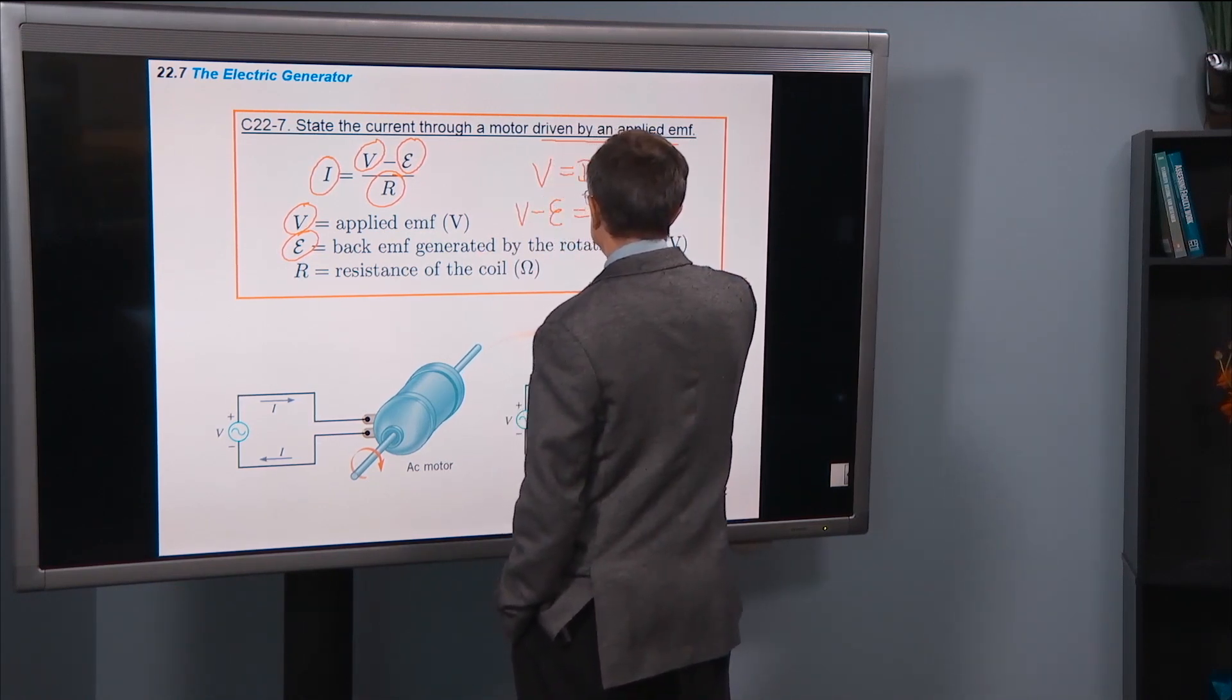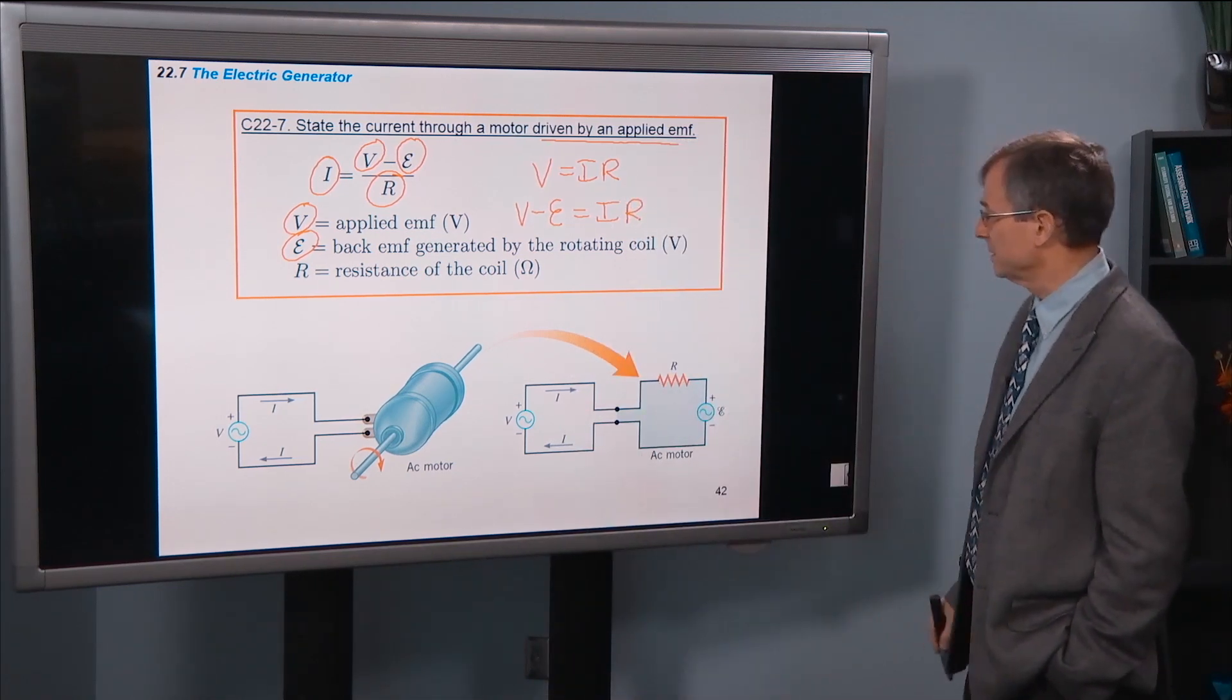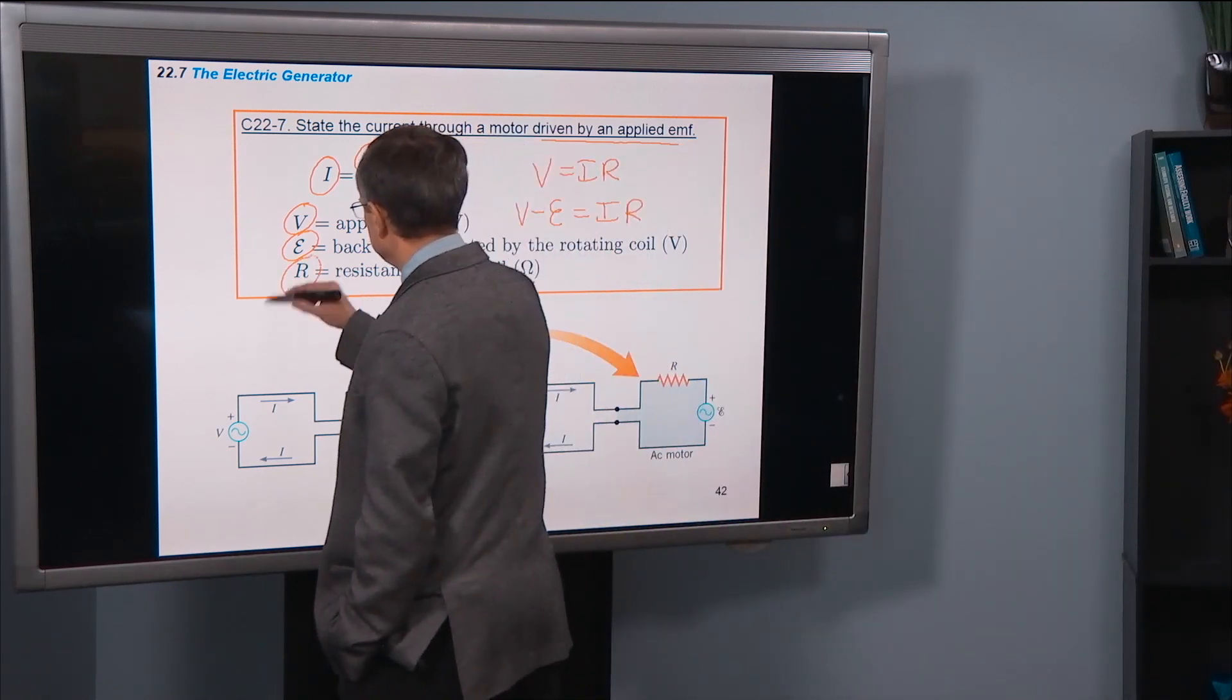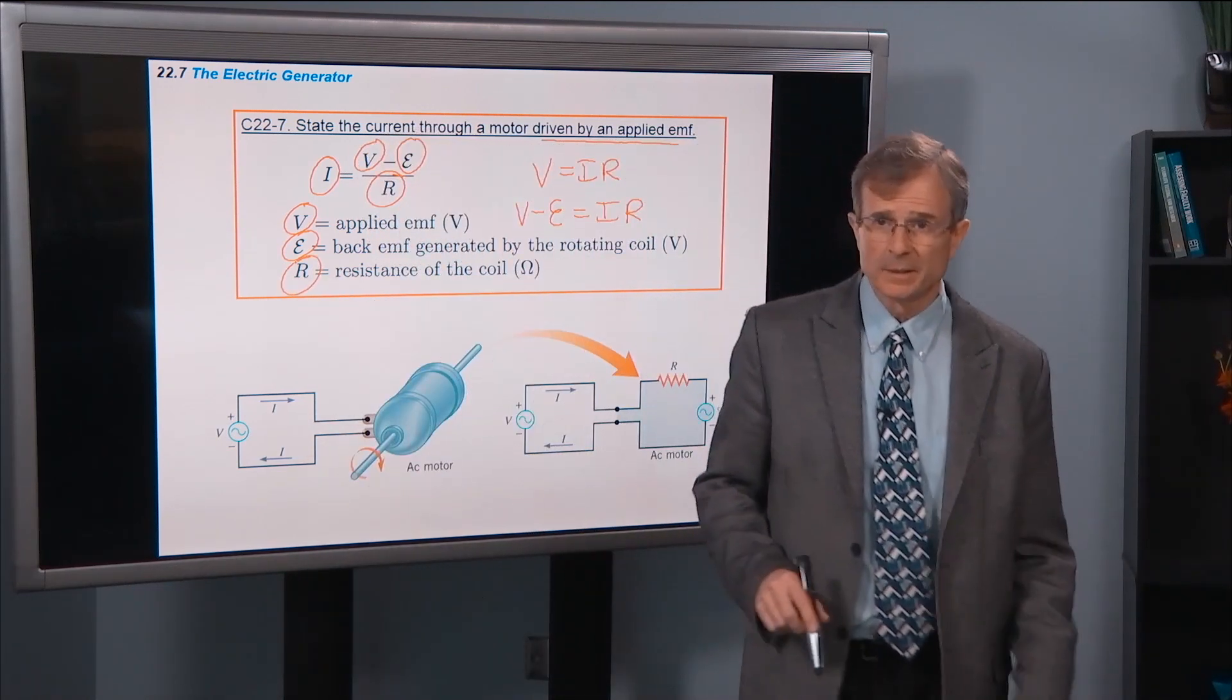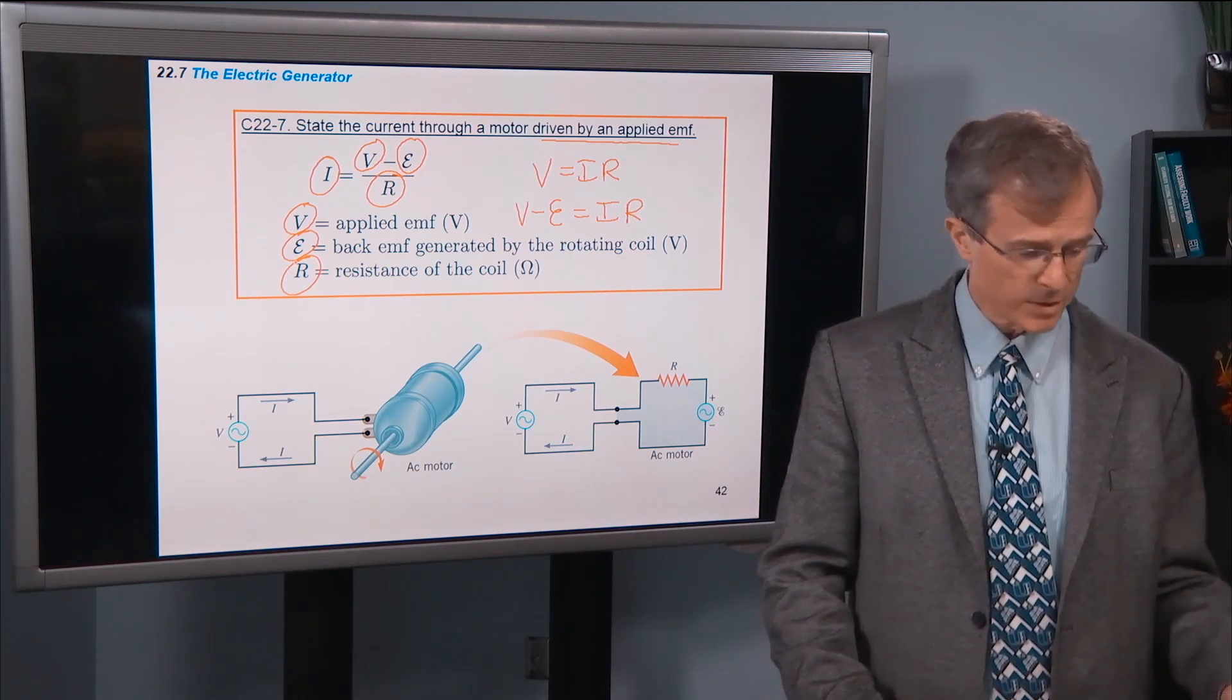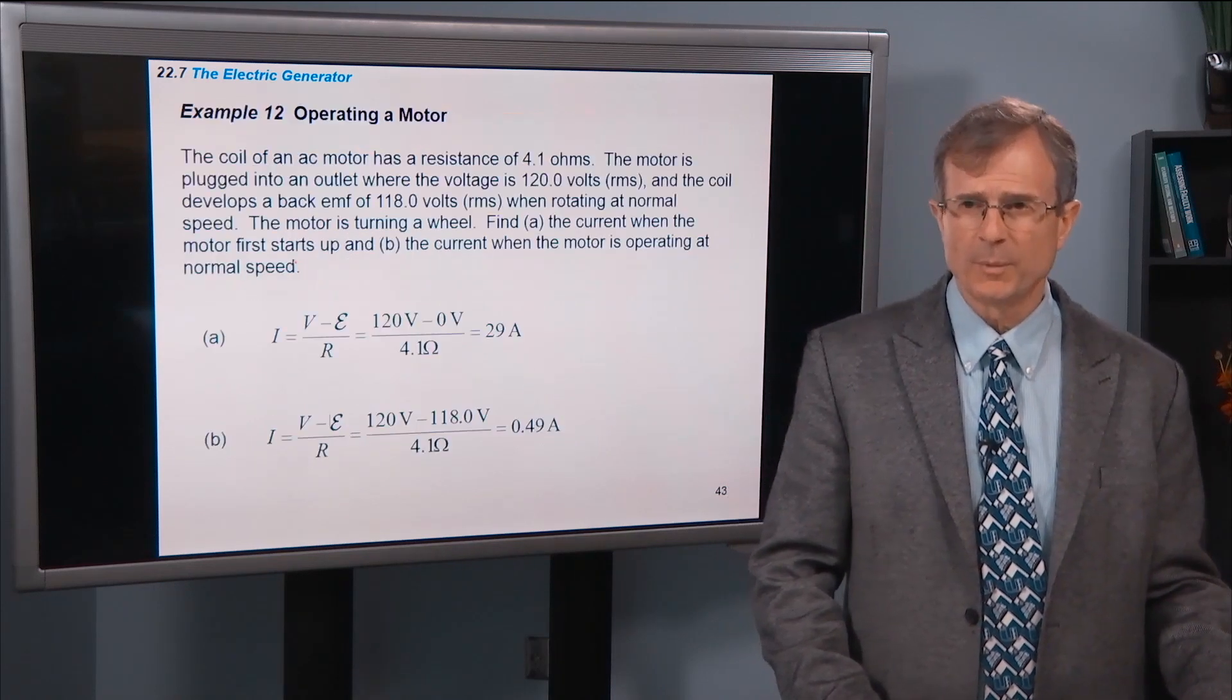This looks like V equals IR where we've just replaced V with V minus E, and then we've solved for the current I. And R is the resistance of the coil. So that's all there is to that. Current is V minus E divided by R, and that allows you to actually calculate the current through a motor that's driven by an applied EMF.